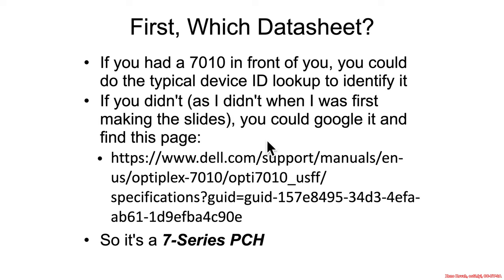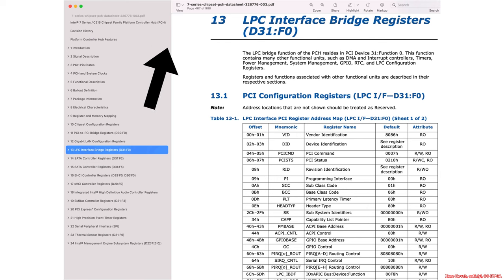Now if you happen to be one of the students who had a 7010 in front of you, you could just use the typical device ID lookup, looking at offset 2 in the configuration address space where you find the device ID. But I didn't actually have one of these yet when I was first making these slides, so I just Googled it, and Googling it you can find a link which tells you that this is a 7-series PCH — that's the datasheet you're going to want to look at. Once you open up the 7-series datasheet, you're going to find the LPC interface on the sidebar, and you can see that there are many different devices specified.